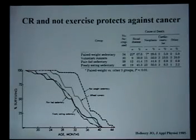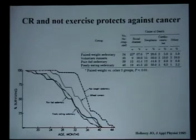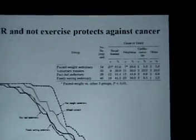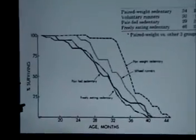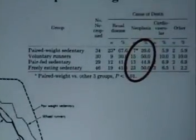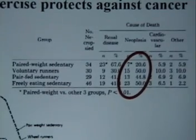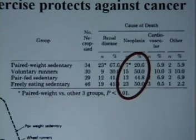This is a study that Dr. Holodz did comparing sedentary ad libitum fed animals with pair-fed sedentary animals, exercising animals, and calorie-restricted animals. You can see the extension in average and maximum lifespan for CR, and in the exercise only the extension in average lifespan. Looking at cause of death, neoplasia in the CR animals was only half that in the exercise group. Other studies suggest that exercise does not have a powerful effect in reducing cancer risk, at least in rodents.